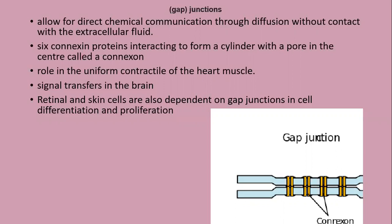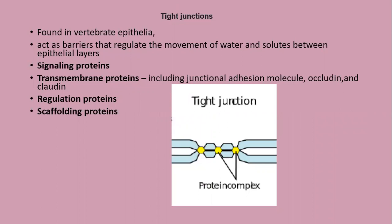The last type is tight junctions. As the name suggests, they seal the connection between two cells, acting as a barrier. Tight junctions are found in vertebrate epithelia and regulate the movement of water and solutes between epithelial cells. They are protein complexes consisting of four types of proteins: signaling proteins, transmembrane proteins such as junctional adhesion molecules (JAM), occludin, and claudin, as well as regulatory and scaffolding proteins.